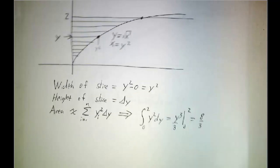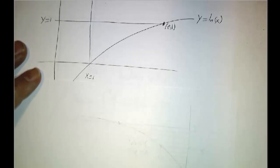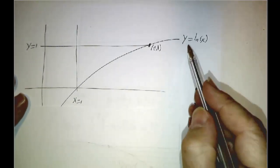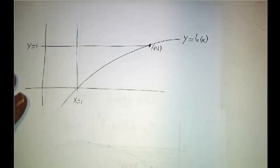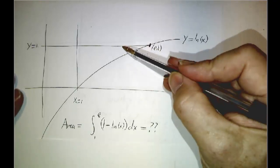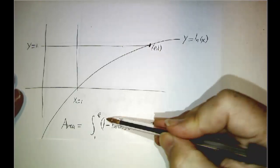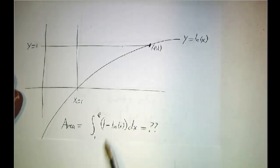Now, here's another example. Let's suppose we want the area between the curve y equals natural log of x, y equals 1, and x equals 1. If you try to slice this vertically, well, we know how to do that. We say the area is the top function, that's 1, minus the bottom function, that's natural log of x. So we have to integrate 1 minus natural log of x dx from 1 to e.